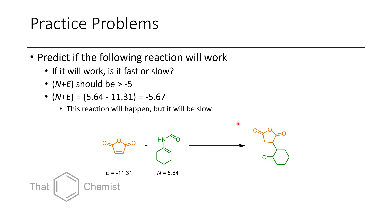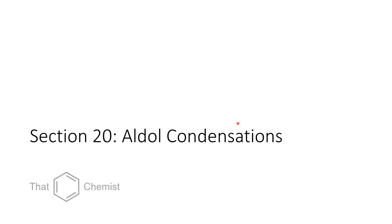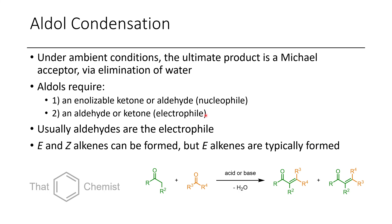With that, let's get into today's material: aldol condensations. When doing an aldol condensation, there are several things to consider. First, we need to have an enolizable ketone or aldehyde — something with alpha protons. We also have to have an electrophile, such as an aldehyde or a ketone, specifically something containing a carbonyl. For good reactivity we'll usually need an aldehyde or a ketone, and more often than not we'll see aldehydes used.